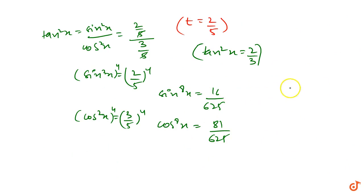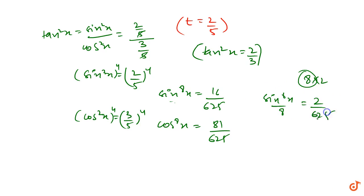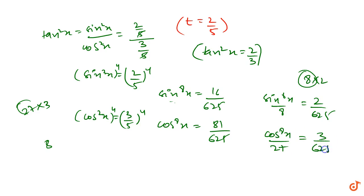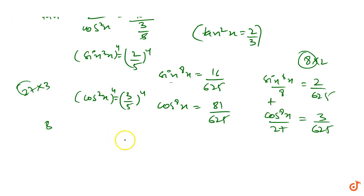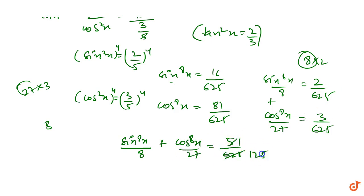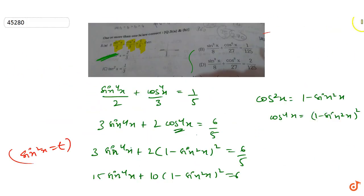Now sin⁸x/8 = 16/625 ÷ 8 = 2/625. And cos⁸x = 81/625; we can write 81 = 27×3, so cos⁸x/27 = 3/625. Adding both: sin⁸x/8 + cos⁸x/27 = 2/625 + 3/625 = 5/625 = 1/125. This matches option B, so option B is also correct.